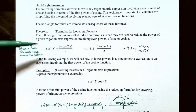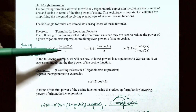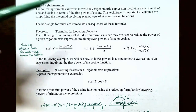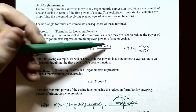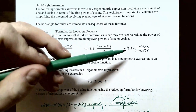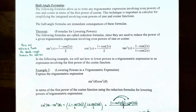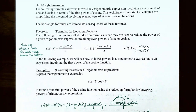Notice how sine squared of x and cosine squared of x are very similar. You have (1 − cos(2x)) / 2 for sine squared of x, but for cosine squared of x you have (1 + cos(2x)) / 2. Tangent squared of x can also be reduced using the identity: (1 − cos(2x)) / (1 + cos(2x)) = tan²(x). These are all obtained from the double angle formulas for the cosine function.